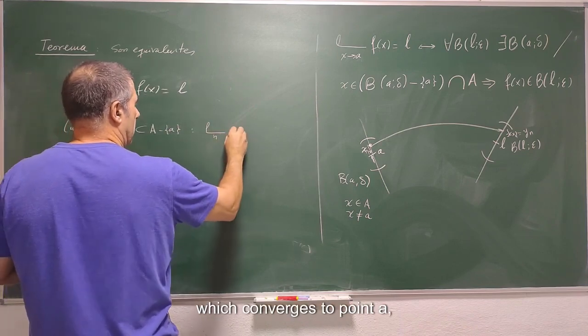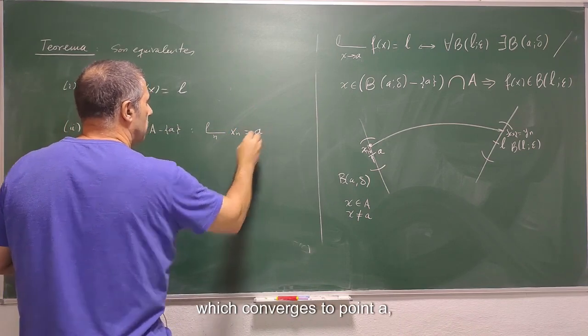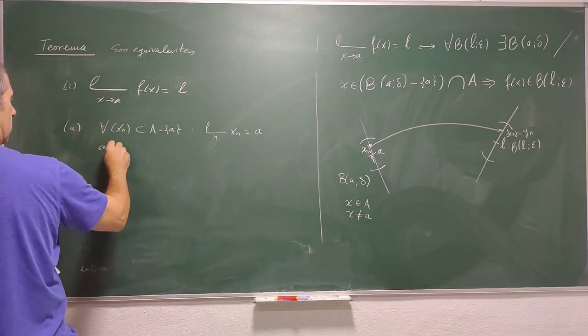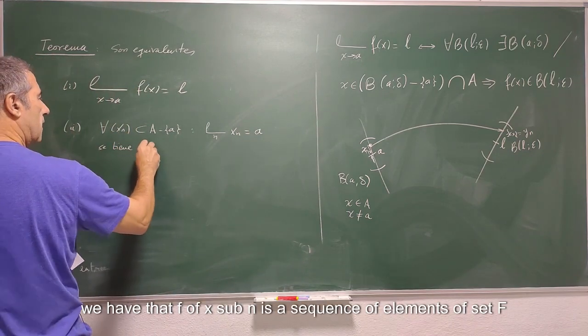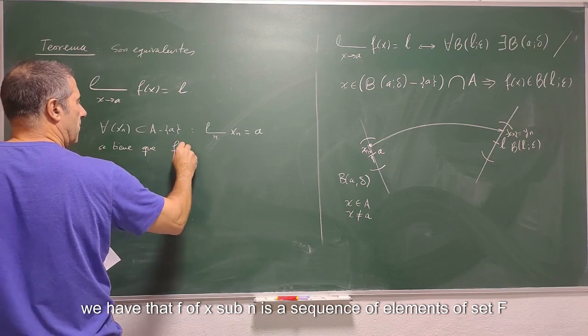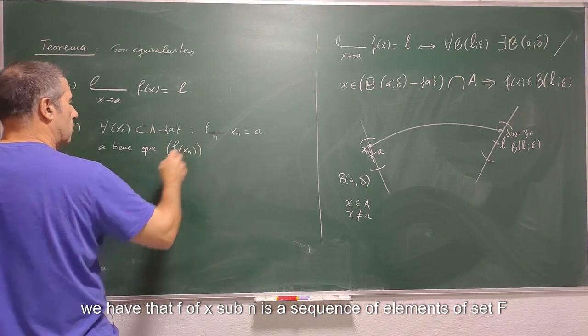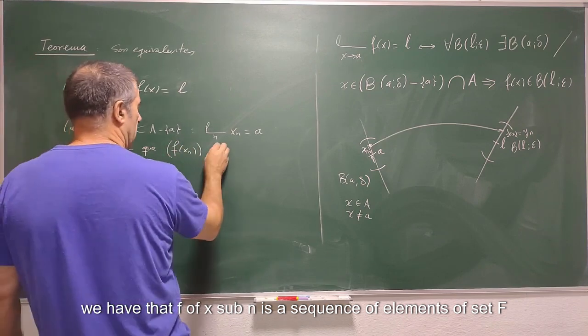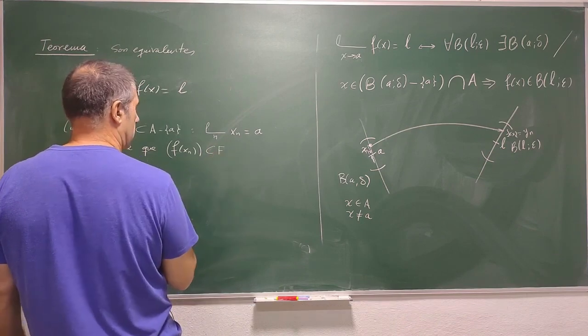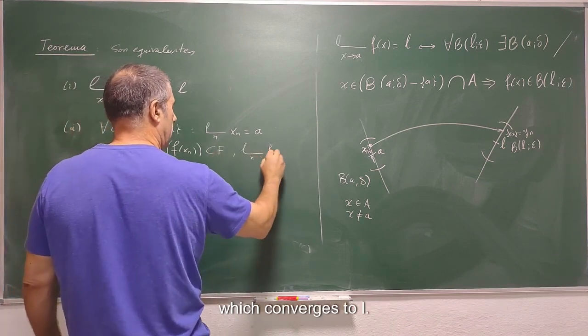Which converges to point a, we have that f of x sub n as a sequence of elements of set F, which converges to L.